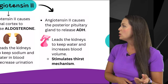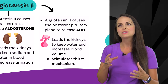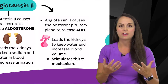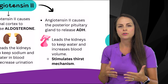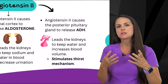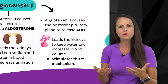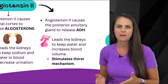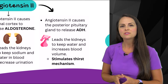Another thing angiotensin 2 does is cause the posterior pituitary gland to release a hormone called ADH — antidiuretic hormone. ADH causes the kidneys to retain water, increasing blood volume. Think of it this way: diuretics help patients urinate extra fluid out of the body. The prefix "anti" means works against, so ADH works against that concept — it causes your body to retain water, having an anti-diuretic effect.